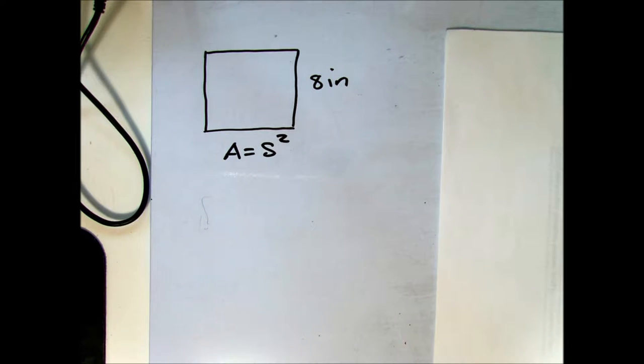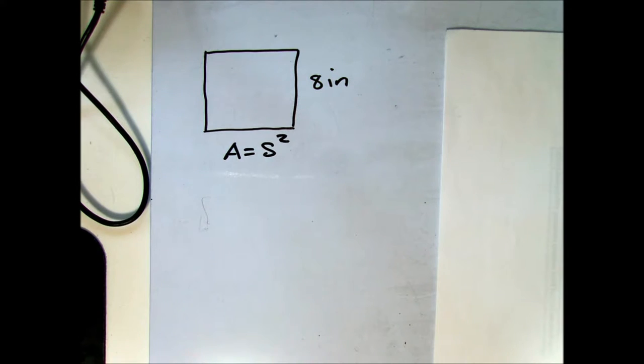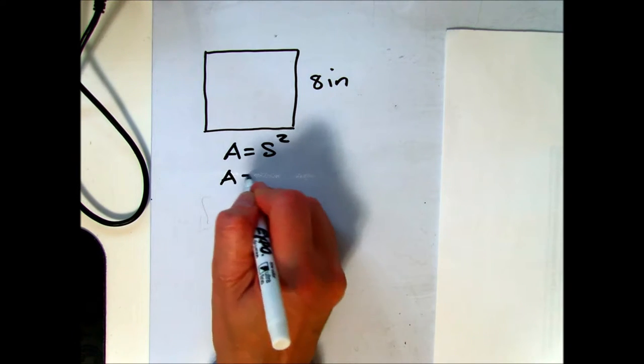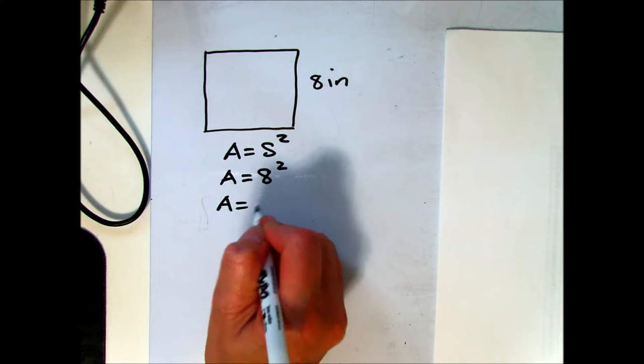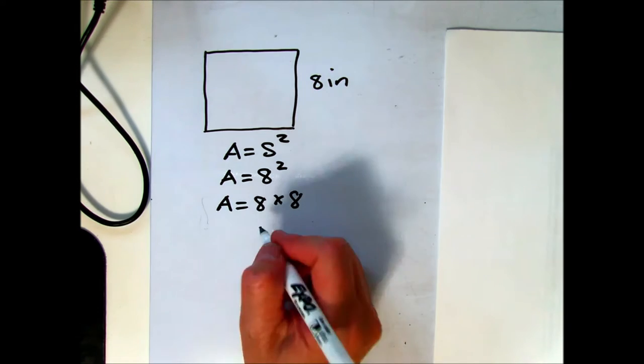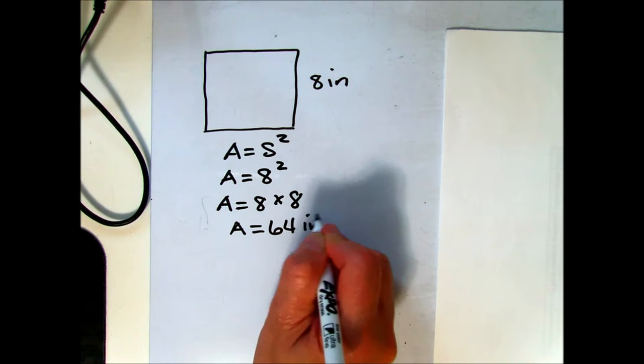If we substitute the dimension given for S, we can figure out the area. The exponent tells us how many times we're going to multiply the base to itself. In other words, area equals 8 times 8, or 64 inches squared.